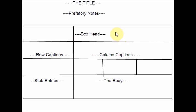Now let us see what is the stub. Stub is the row caption. The horizontal headings and subheadings of the row are called row captions, and the space where these row headings are written is called the stub.